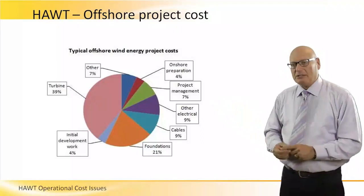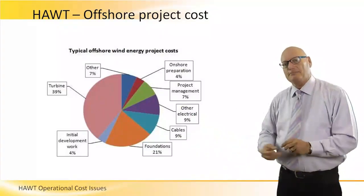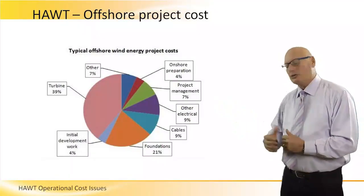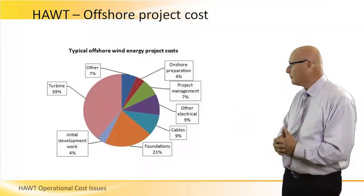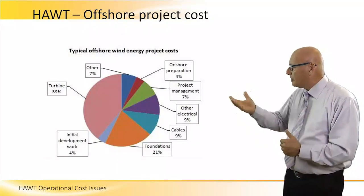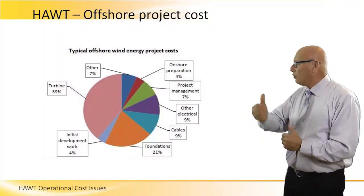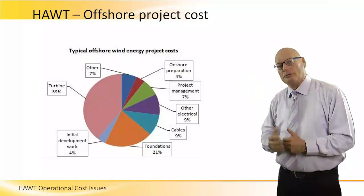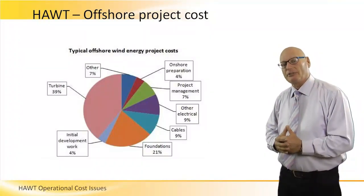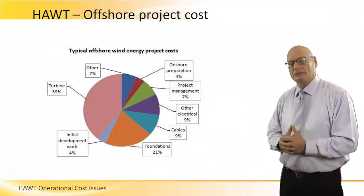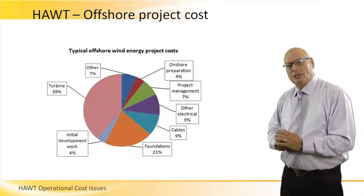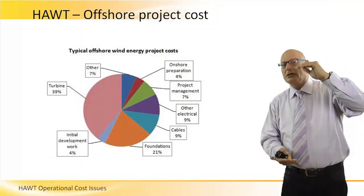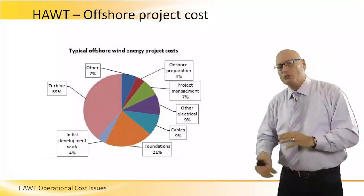Electrical cables transmitting energy to shore account for 9%. Project management is 7%. Onshore preparation to receive electricity coming from the offshore project is another 7% — we need a station right there. So the turbine is only 40%; what we see is only 40% of the things we don't see.